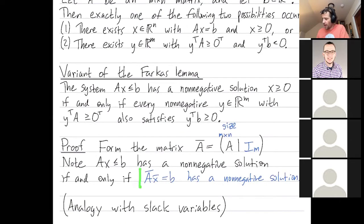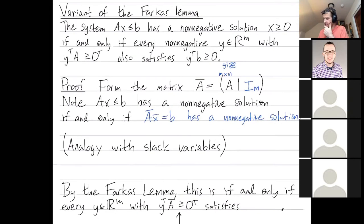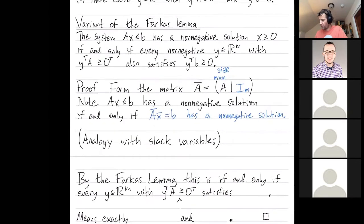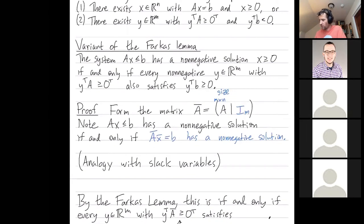So now I have an equality and so I can apply the standard Farkas Lemma. All right, so I'm in case one, right? I'm in case one. This linear system of equalities has a non-negative solution. So by the standard Farkas Lemma, this is if and only if. So since item one is satisfied, that means item two is not satisfied.